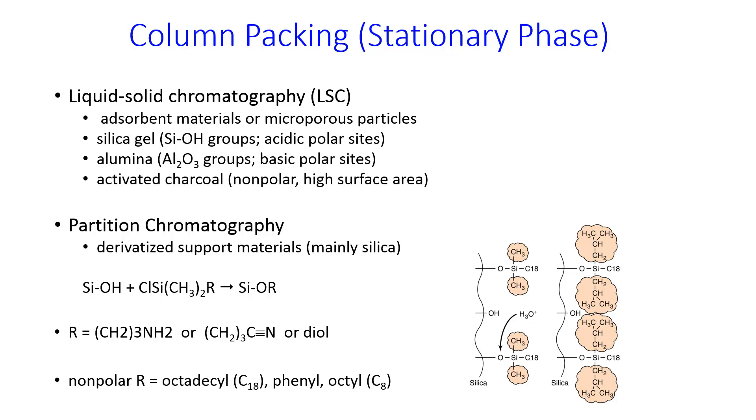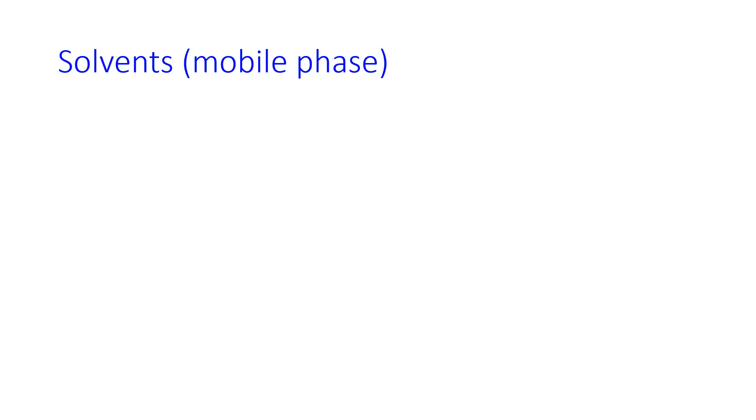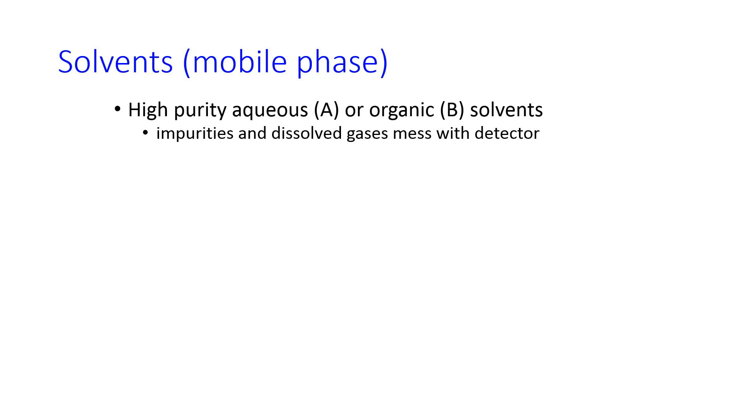The stationary phase is in the column. And so the solvents that are pumped through constitute the mobile phase. Characteristics of mobile phase solvents are that they are very high purity. And they can either be aqueous or organic. And you usually use a mix of the two depending on what you're trying to separate. The reason that we want them to be high purity is because we don't want to either detect the impurities at the detector or have dissolved gases or other things that can give us a bad signal at the detector.